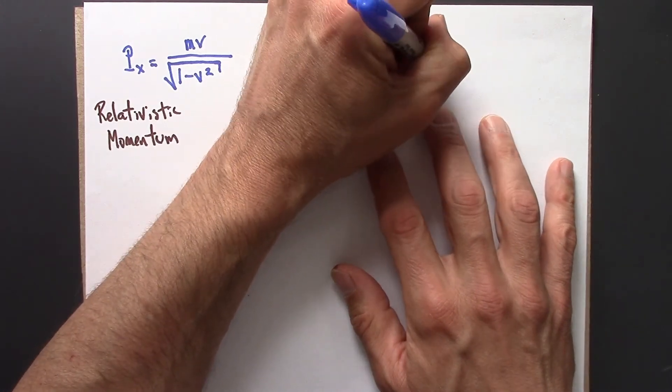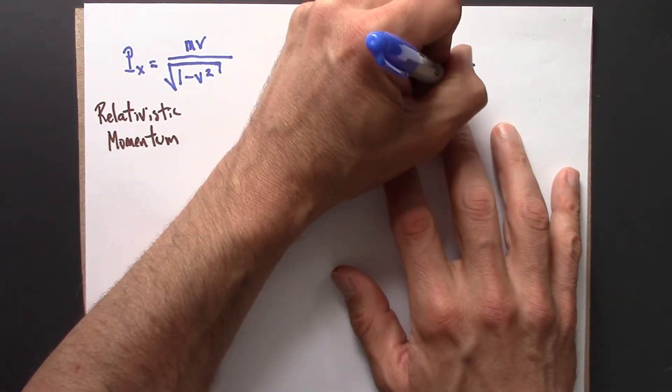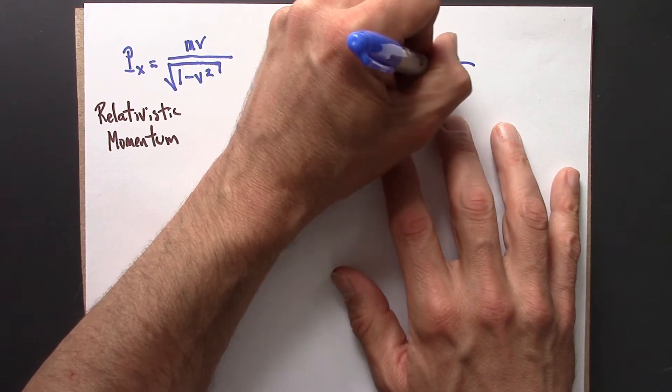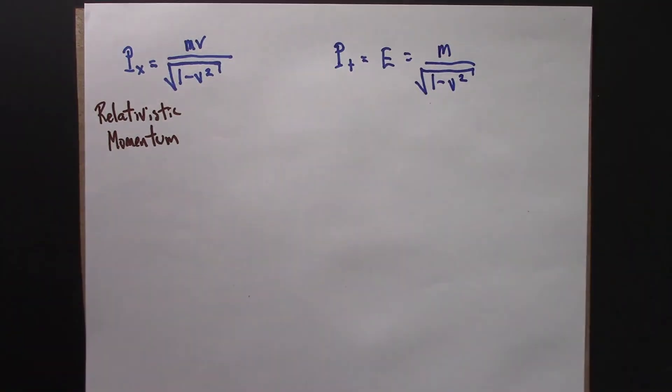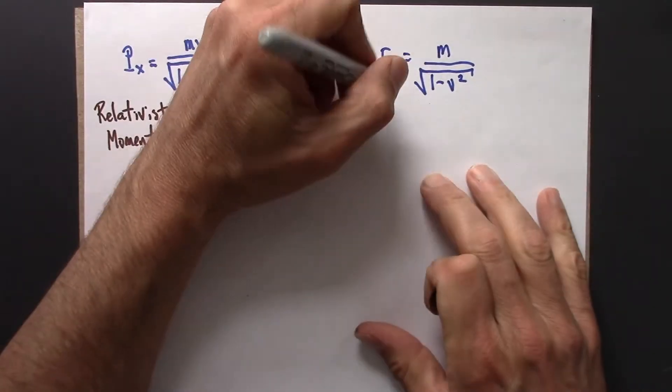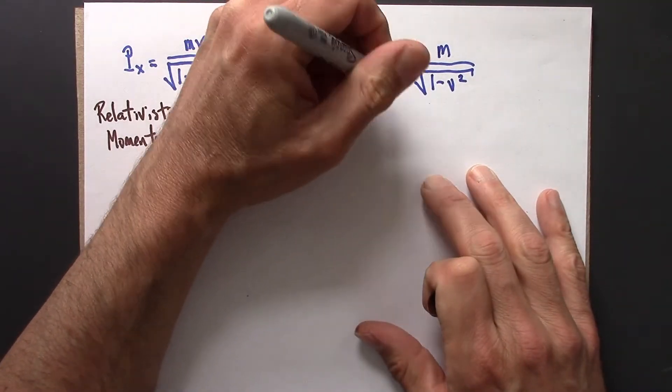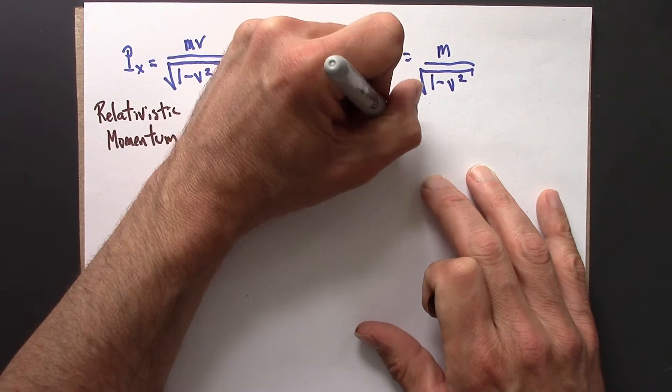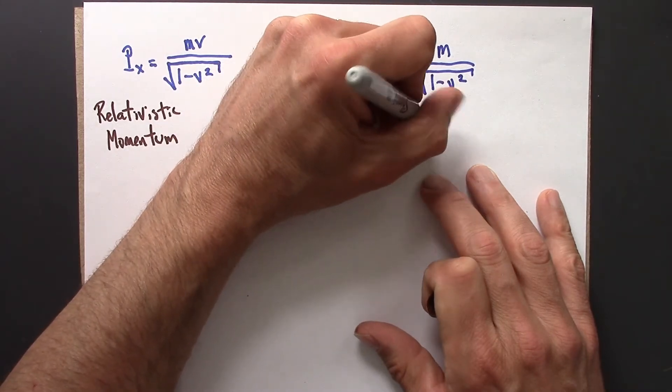And that was just m over square root of 1 minus v squared. So just as a reminder, this is relativistic energy.